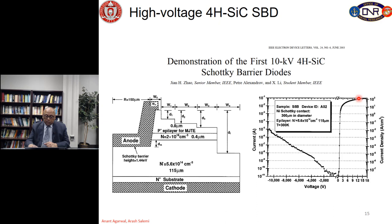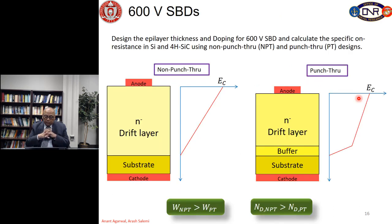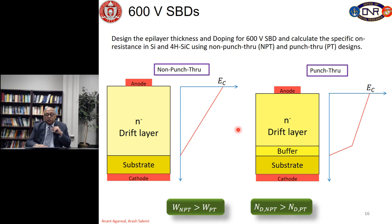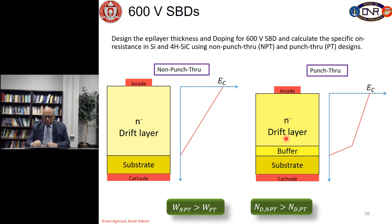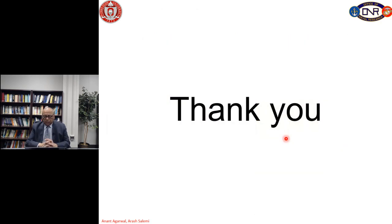Another example is the first 10 kV silicon carbide Schottky diode from Rutgers University (2003), using N-type SiC 115 microns thick, doped at 5.6×10¹⁴ cm⁻³, with a JTE edge termination. The diode sustains more than 10,000 V with only about 10 microamps of leakage current. In the forward direction, current increases and is then limited by the drift layer resistance. With this, today's lecture concludes. The next lecture will cover designing 600 V Schottky diodes in silicon and silicon carbide, including non-punch-through and punch-through cases.